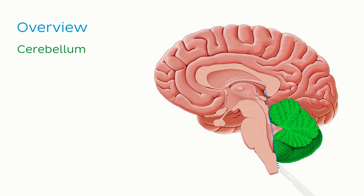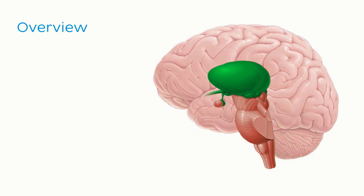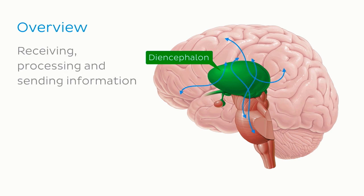Then we'll ascend, both in position and function, to look at the different parts of the diencephalon. This part of the brain does many things, including acting as a mediator for the nervous system by receiving and processing information, then sending it where it needs to go.